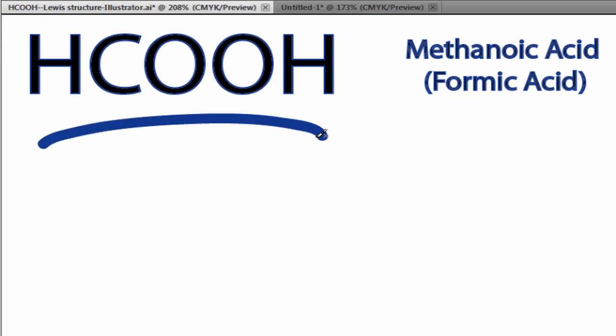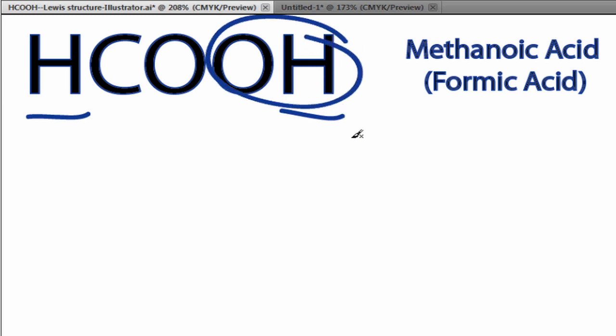This is the HCOOH Lewis structure, methanoic acid. The way it's written gives us quite a bit of information about HCOOH. First of all, we have an H in front, that means it's going to be an acid, and then we have this H at the end, so that's probably going to be attached to the OH right here.